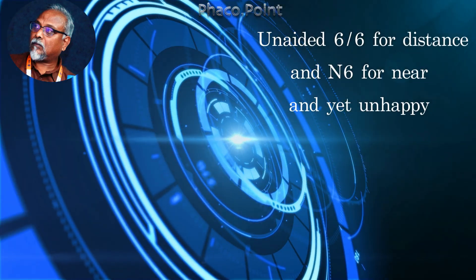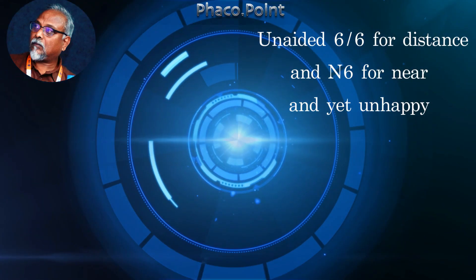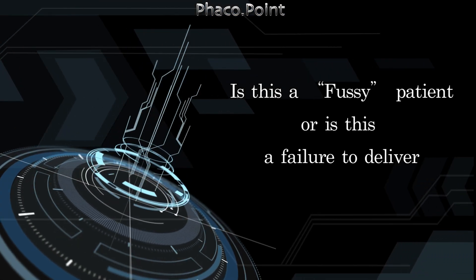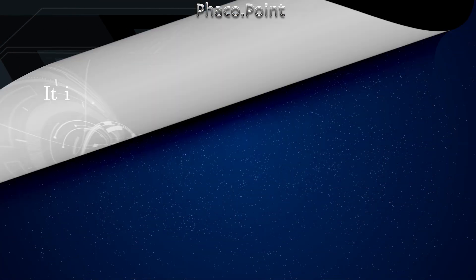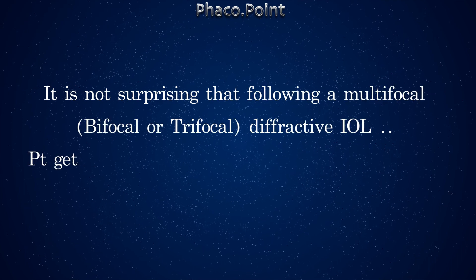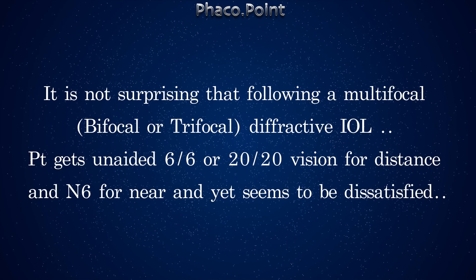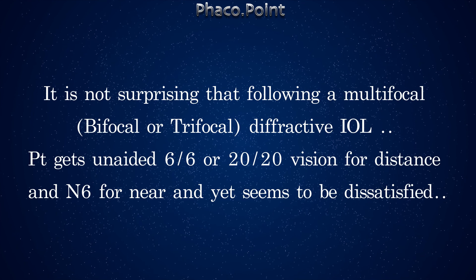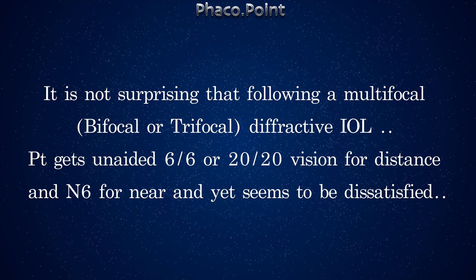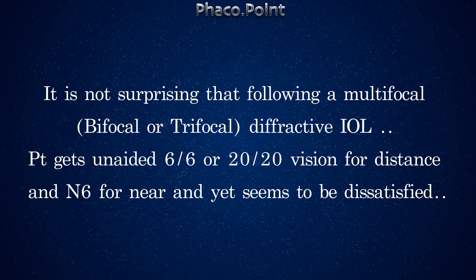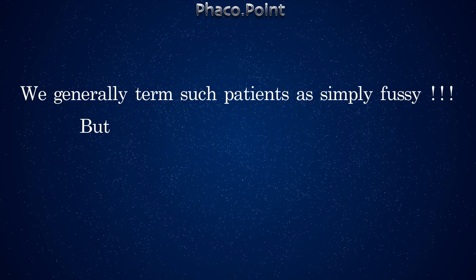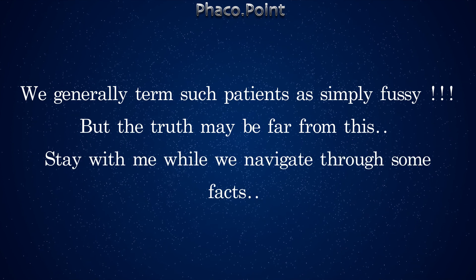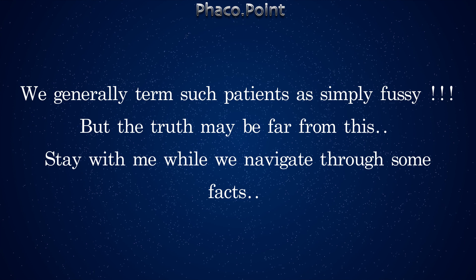A patient has an unaided 6/6 vision for distance and N6 for near, and yet is unhappy. Is it that the patient is fussy, or is it a failure on our side to deliver? It is not surprising that following a multifocal, bifocal, or trifocal diffractive IOL, a patient who gets 6/6 for distance and N6 for near still seems dissatisfied with the postoperative outcome. We generally term such patients as simply fussy, but the truth may be far from this.